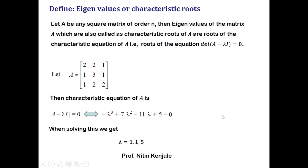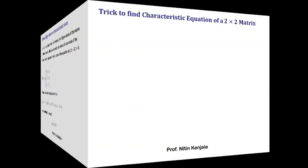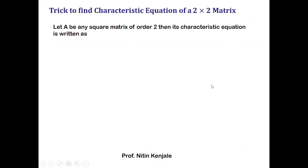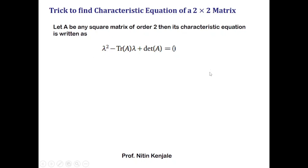Now let me show you a trick to find eigenvalues of a 2×2 matrix. Let A be any 2×2 matrix. Then its characteristic equation is given by lambda squared minus trace of A times lambda plus determinant of A equals zero. You just have to put values for trace of A and determinant of A in this equation to get the characteristic equation of the matrix.